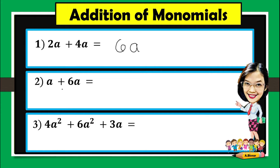For number 2, a plus 6a. A in here means 1a. And therefore, 1 plus 6 is 7. Then copy the given variable which is a. You have to remember that if the numerical coefficient is 1, you don't need to write it anymore.